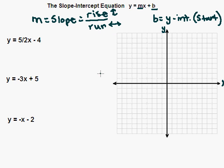Let's look at the first example and try this out. We have y equals 5 halves x minus 4. First, let's identify our slope and our y-intercept. The m value — the slope — is always in front of the x. So in this case, our slope is 5 over 2, or 5 halves. Remember, it always has to be in fraction form because it's rise over run.